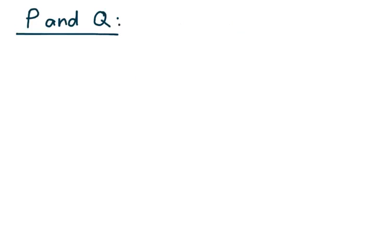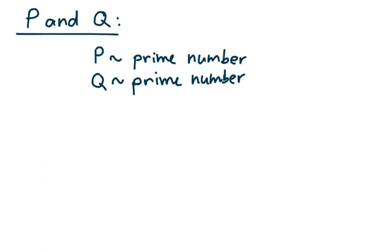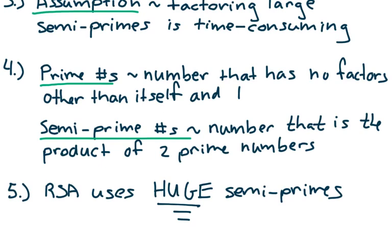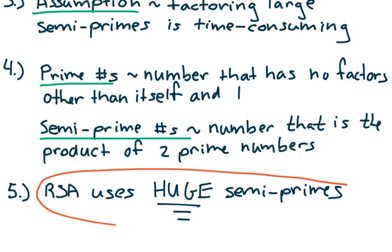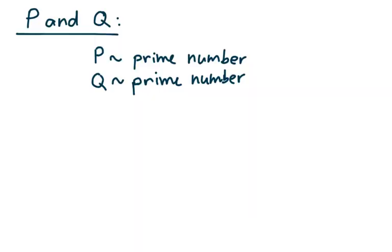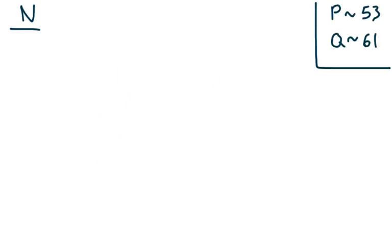Starting off with P and Q: the key generator can set the values of P and Q to anything they would like, provided that they're prime numbers. RSA typically uses huge semiprimes, which means those prime numbers must also be huge. But for simplicity's sake, we're going to stick to small values in this video. So let's say P is 53 and Q is 61, both of which are prime numbers.